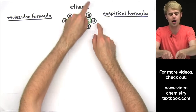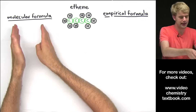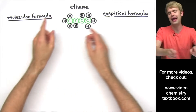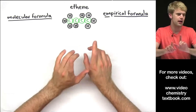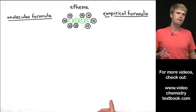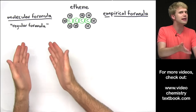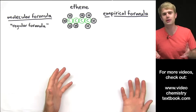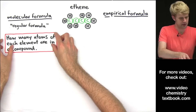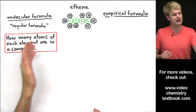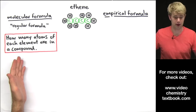Here's a molecule of the compound ethene. Let's see how to write a molecular formula and an empirical formula for ethene. I often like to think of molecular formula as the regular formula, which you may already be familiar with. The molecular formula tells us how many atoms of each element are in a compound.